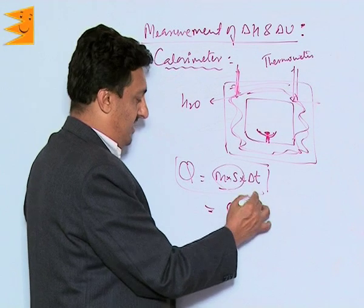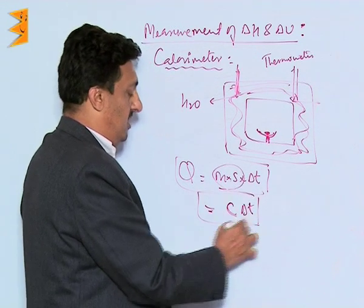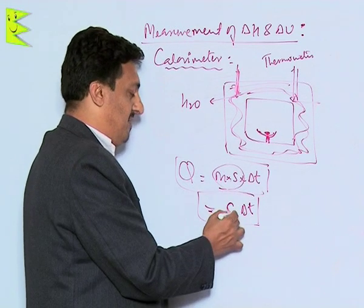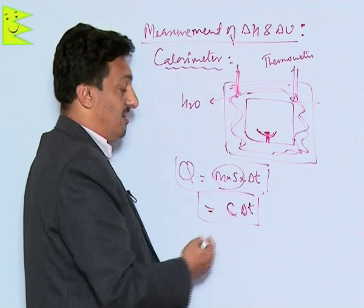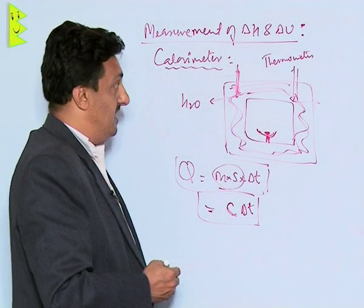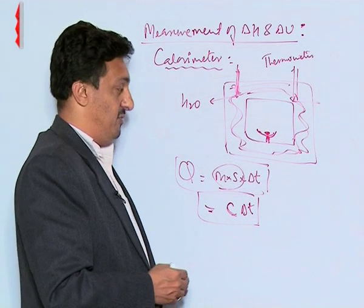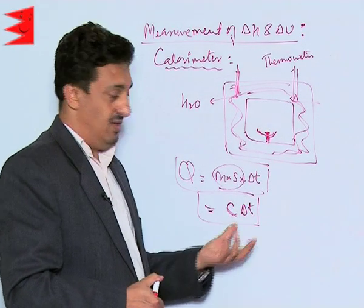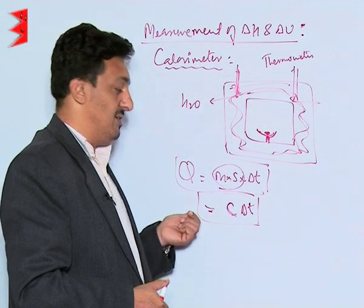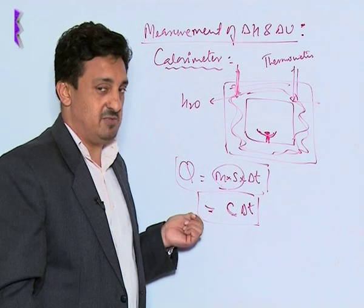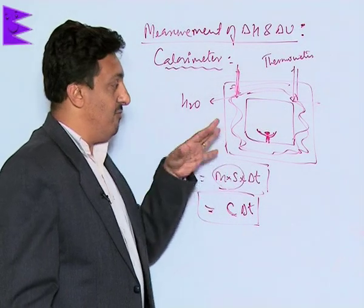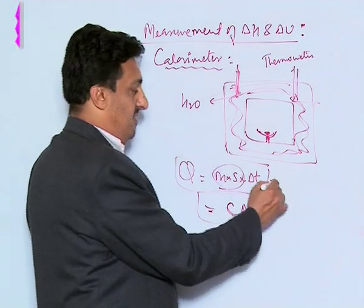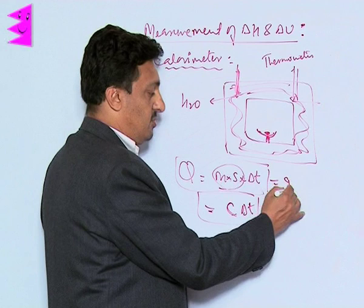We can find out q as CΔT, because that gives us the exact idea of how much the temperature has increased. So if we know the molar heat capacity of the bomb calorimeter, we can easily find out how much energy has been given out.